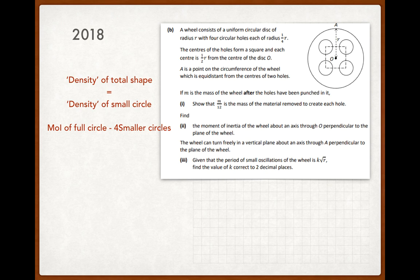And then the last part: the wheel can turn freely in a vertical plane about an axis through A perpendicular to the plane of the wheel. Given that the period of small oscillations of the wheel is that, find the value of k correct to two decimal places. I'm taking part two, I'm using the parallel axis theorem to shift the moment of inertia up to the axis A, and that gives me the moment of inertia. The h value between the axis of rotation and the center of the object is r, and I'm using my period of small oscillation formula. You should be able to get it.